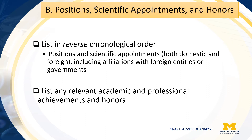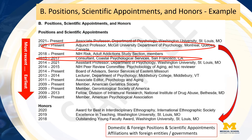Section B of the biosketch is Positions, Scientific Appointments, and Honors. You want to list in reverse chronological order all positions and scientific appointments, both domestic and foreign, including affiliations with foreign entities or governments. This would include titled academic, professional, or institutional appointments, whether or not remuneration is received, and whether full-time, part-time, or voluntary. You also want to list any relevant academic and professional achievements and honors. For students, post-doctorates, and junior faculty, this could include scholarships, traineeships, fellowships, or department awards. For clinicians, this could include clinical licensures or specialty board certifications. Here is an example of Section B, showing positions, scientific appointments, and honors listed in reverse chronological order, including foreign and domestic appointments.